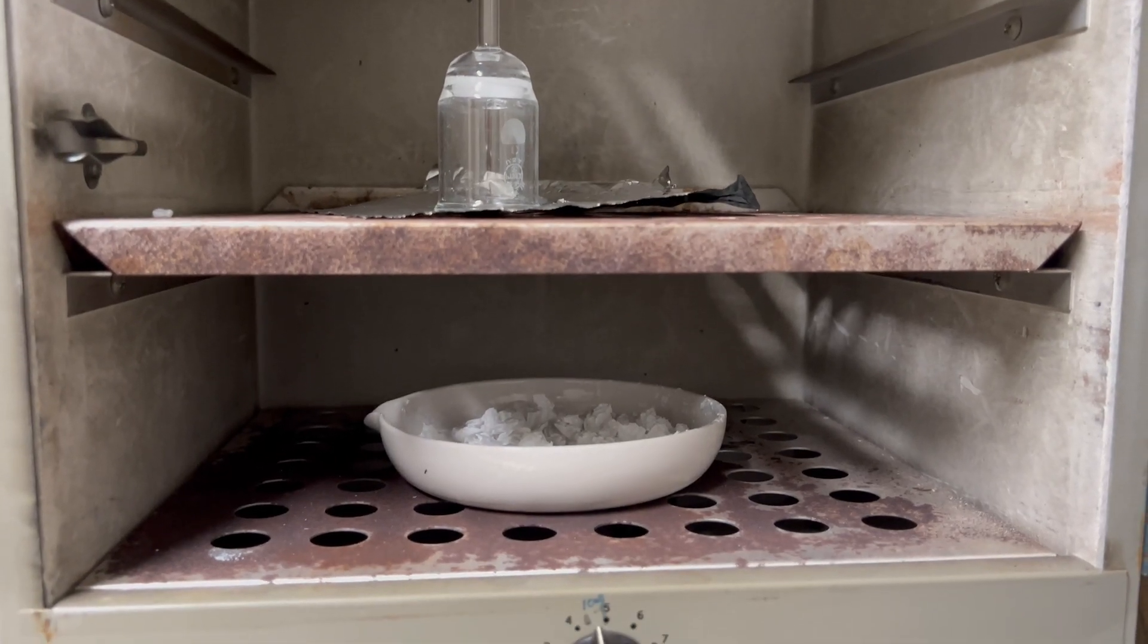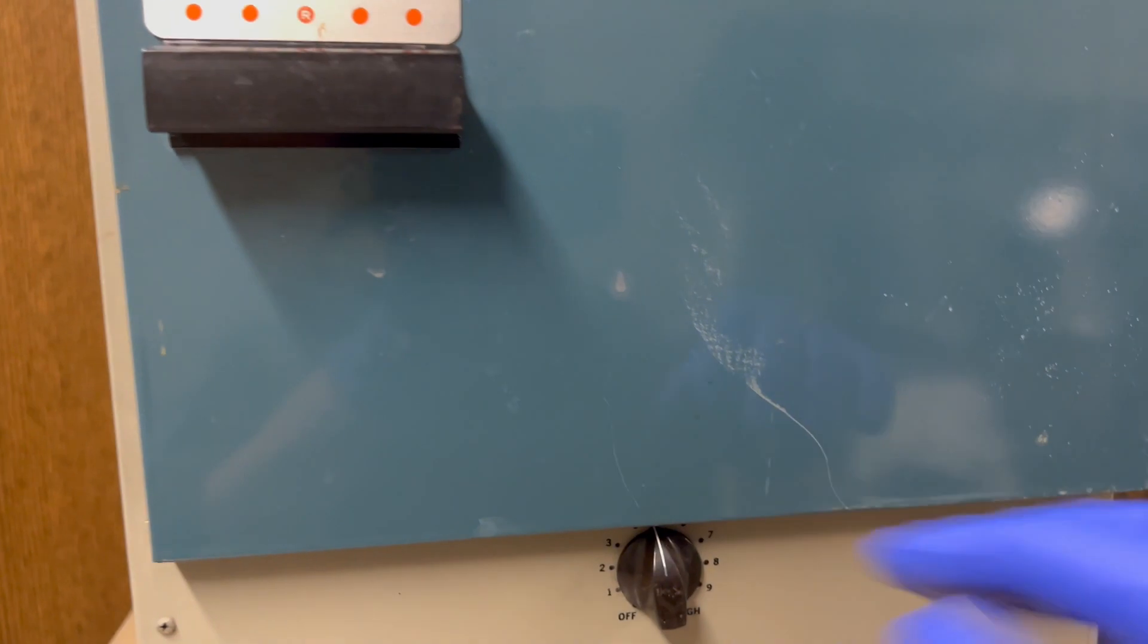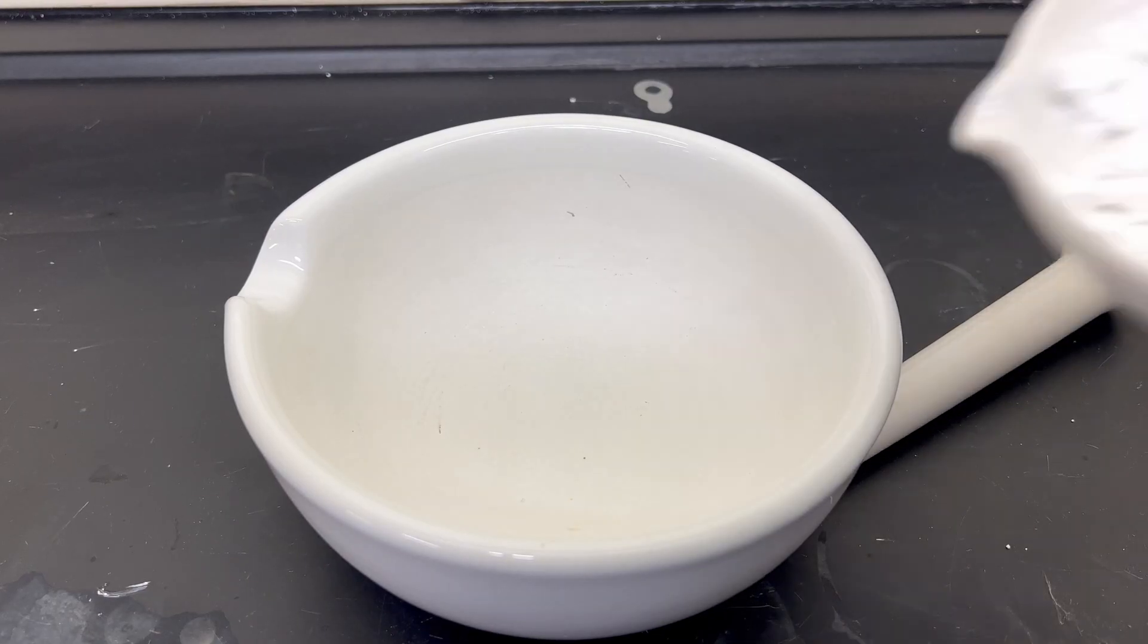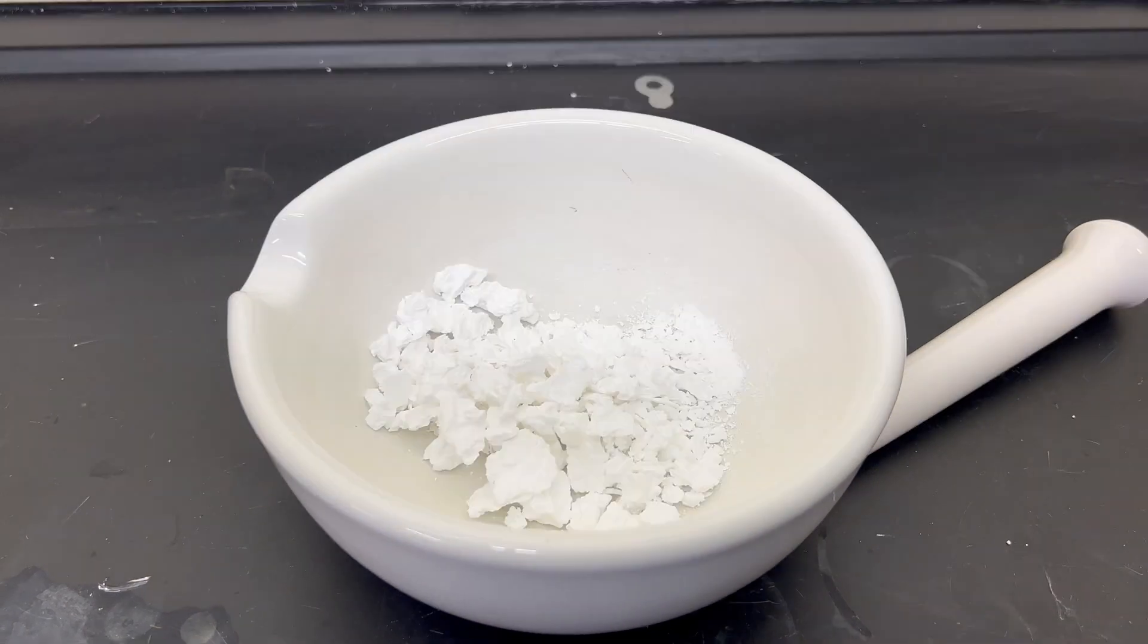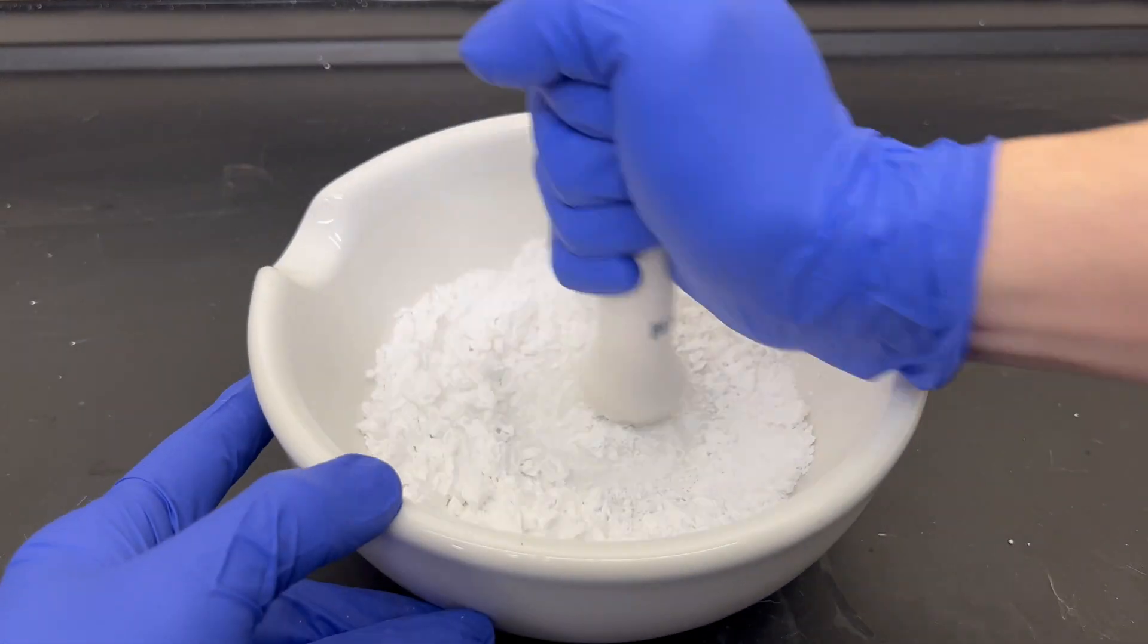The sodium benzoate and sodium hydroxide mix is then placed in a drying oven to drive off any leftover water. Once dry and cool, the sodium benzoate and hydroxide are ground to a powder in a mortar and pestle.